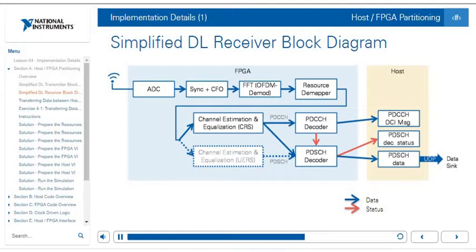Finally, the PDCCH decoder sends the PDCCH DCI message to the host, and the PDSCH decoder sends status to the PDSCH decoder status indicator on the host and sends data to the PDSCH data sink, which can then be forwarded to UDP. At a high level, most of the signal processing — synchronization, OFDM demodulation, resource demapping, channel estimation, equalization, and decoding — all happen on the FPGA. On the host side, we basically read the data and read the status.